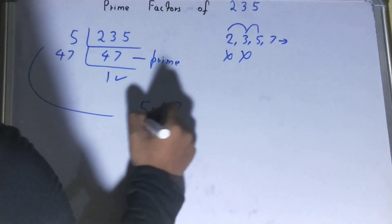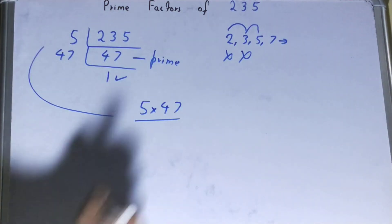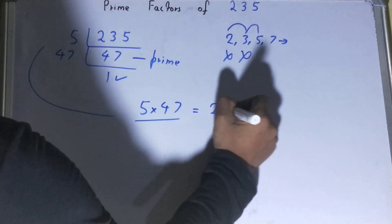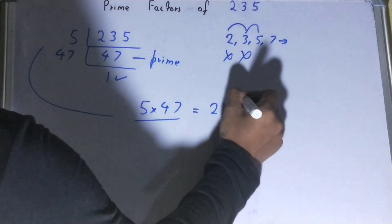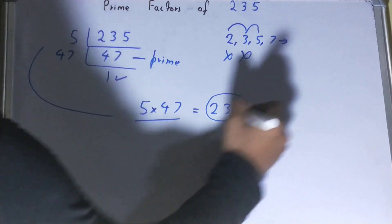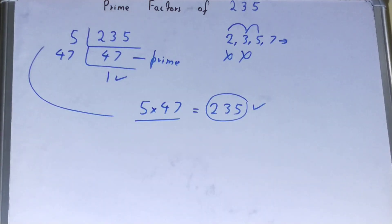If you want to confirm whether it is right or not, you can multiply them. If on multiplying you get the number back again, that means your calculation is correct. If not, you need to recheck.